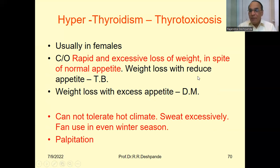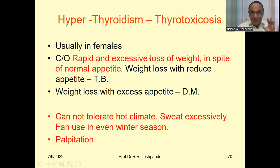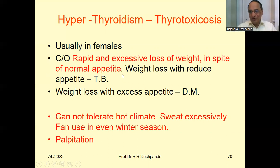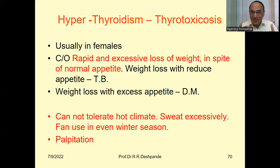Weight loss with reduced appetite indicates tuberculosis. Weight loss with excessive appetite indicates diabetes mellitus. Loss of weight with normal appetite suggests thyrotoxicosis or thyroid disorder. Loss of weight with loss of appetite points to tuberculosis, cancer, or HIV. Weight loss with excessive polyphagia, polydipsia, and polyuria — these are the three P's in diabetes mellitus. I have uploaded a diabetes mellitus video before this — please check it out.